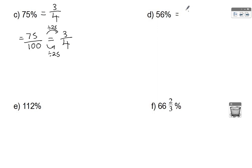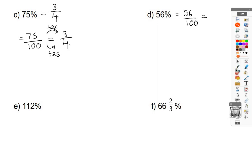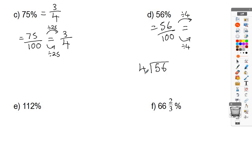For D, 56%: that is 56 out of 100, which we want to simplify. 4 goes into both 56 and 100. Divide both numerator and denominator by 4. To divide 56 by 4, you may want to use a bus stop method: 4 into 5 is 1 remainder 1, 4 into 16 is 4, so the numerator is 14. 100 divided by 4 is 25. Check whether any common factor goes into 14 and 25 — there isn't one — so 14/25 is in its simplest form.